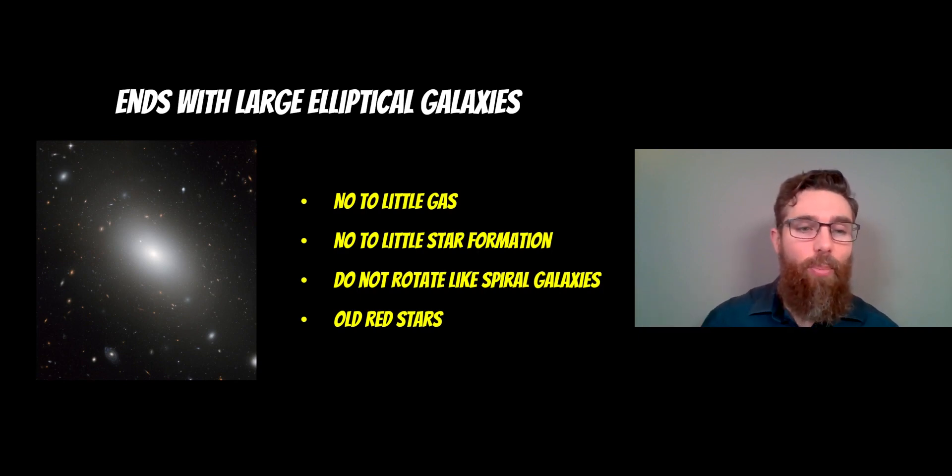Now the bottom-up theory supports the observations better than some of the other theories. We see a range of spiral galaxies, elliptical galaxies, and we see them merging. We know they do merge. So the bottom-up theory works best with our observations at the moment.